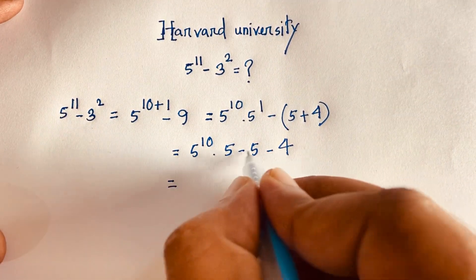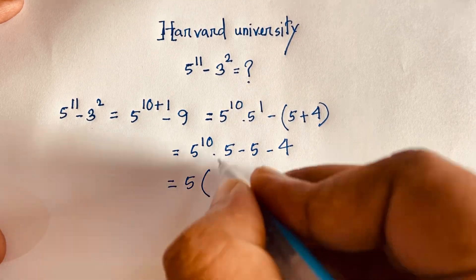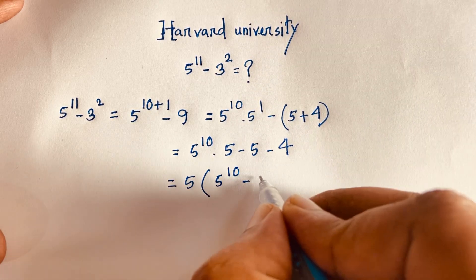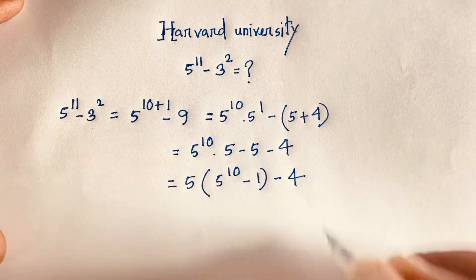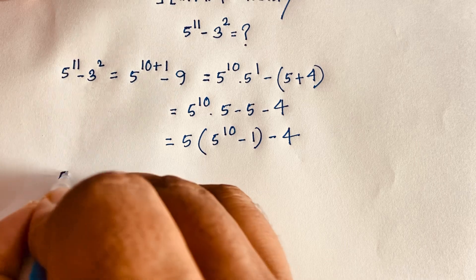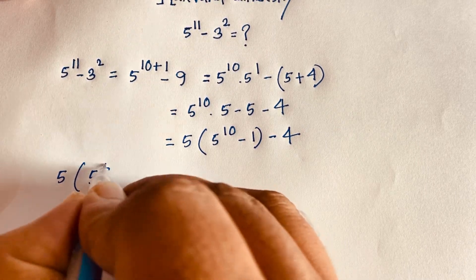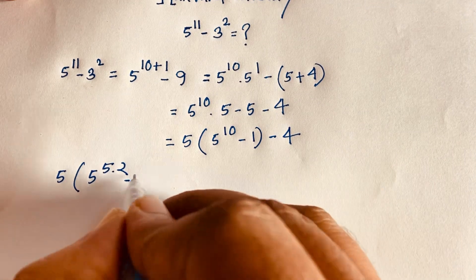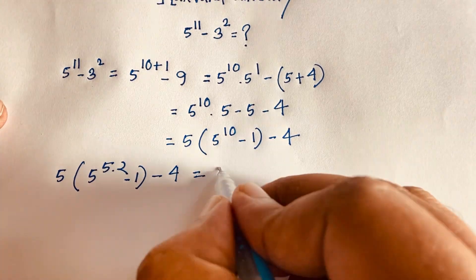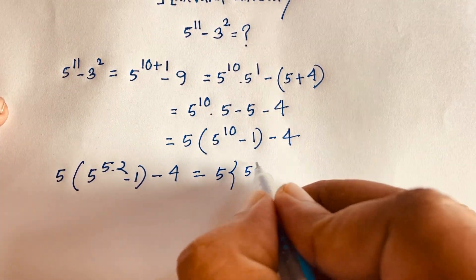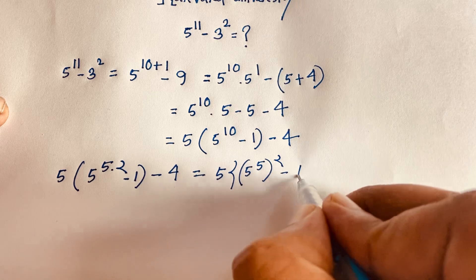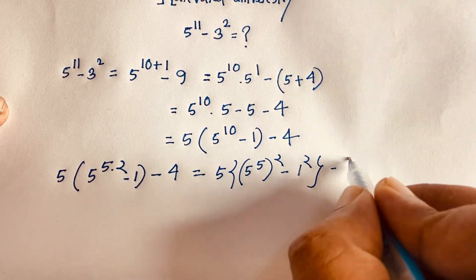Now 5 is common here, so factoring out: 5 times (5 to the power 10 minus 1) minus 4. Then we can write this as 5 times 5 to the power 5 squared, which gives 5 times (5 to the power 5) squared minus 1 squared, minus 4. Note that 2 times 5 equals 10, so (5 to the power 5) whole squared equals 5 to the power 10.